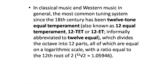In classical music as well as western music, the most common tuning system since the 18th century has been the 12-tone equal temperament, informally abbreviated as 12 equal, which divides the octave into 12 parts. The sapta swaras are divided into 12 swara sthanas, where swara means note and sthana means position. In this way, the sapta swaras are divided into 12 equal swaras, and this method is known as the 12-tone equal temperament method.